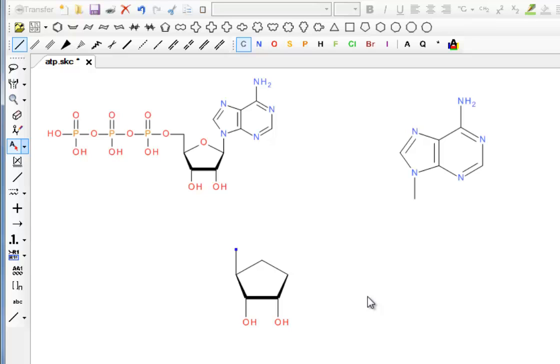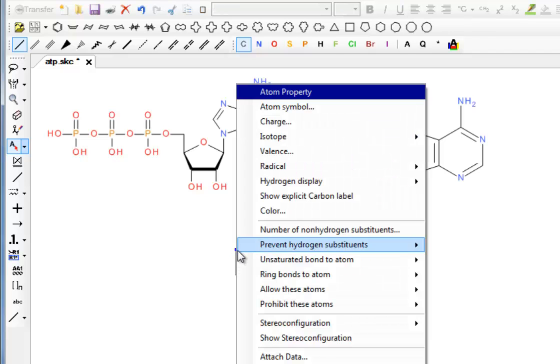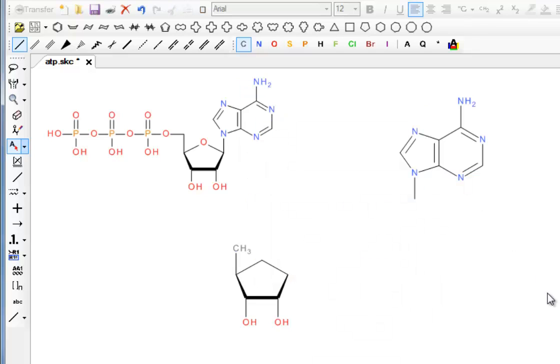You can do it in two steps. You can make the carbons explicit, then make the hydrogens explicit. But the shortcut is simply to go to hydrogen display and click on auto, and you put in the carbons and the hydrogens.